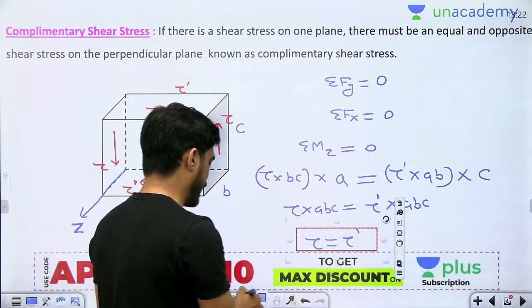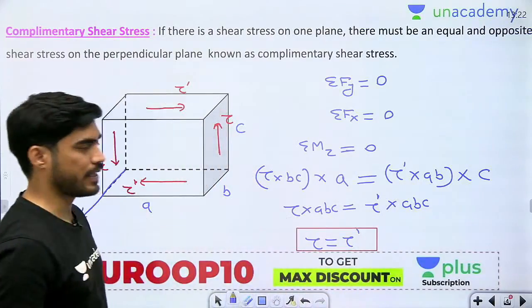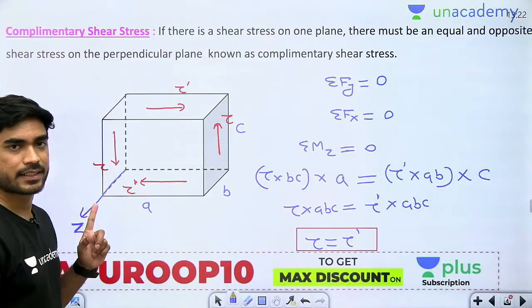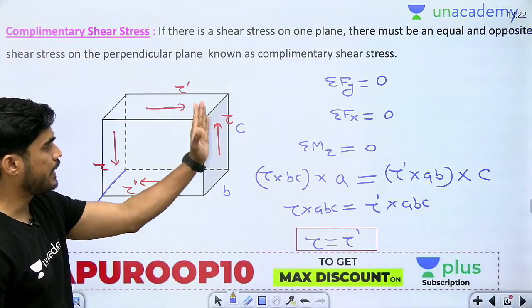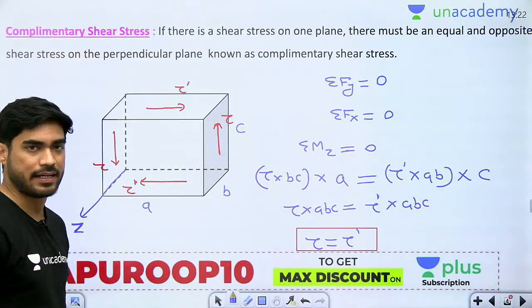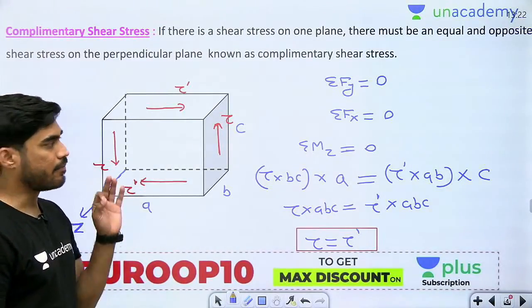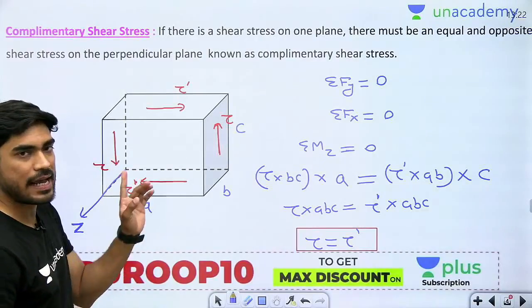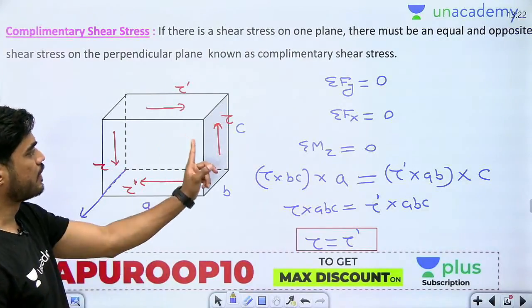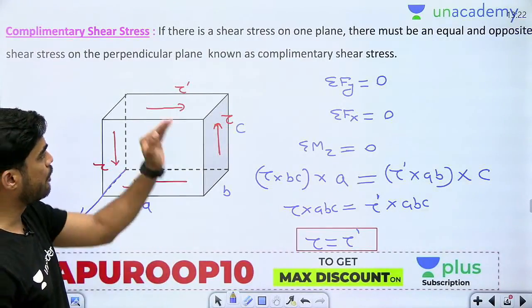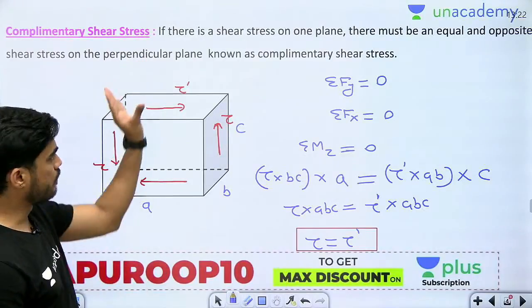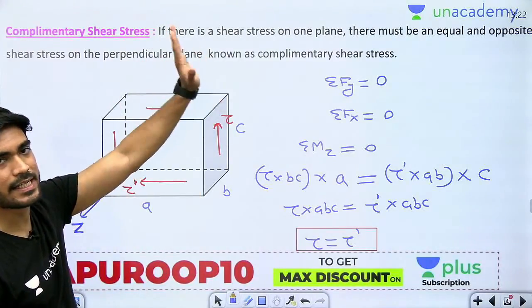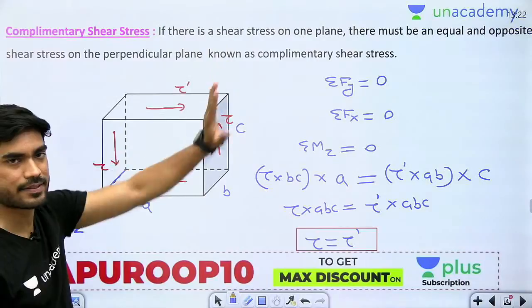So, what does it mean? It means if you apply shear stress on any one plane of the body, there must be an equal and opposite shear stress on the perpendicular plane, which will be known as complementary shear stress.